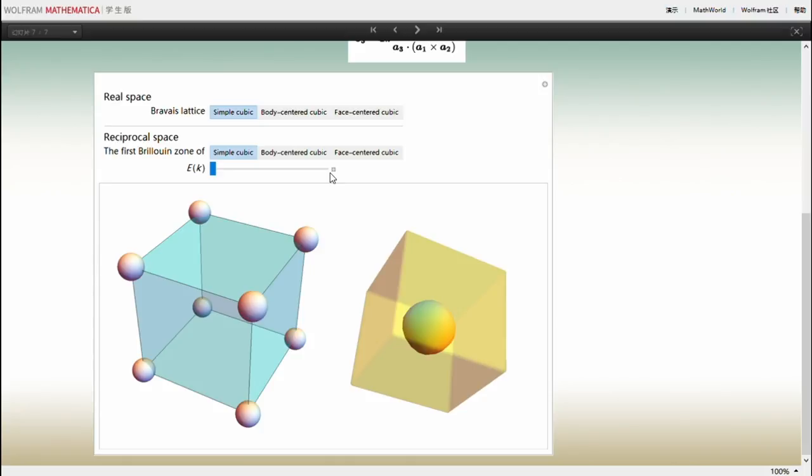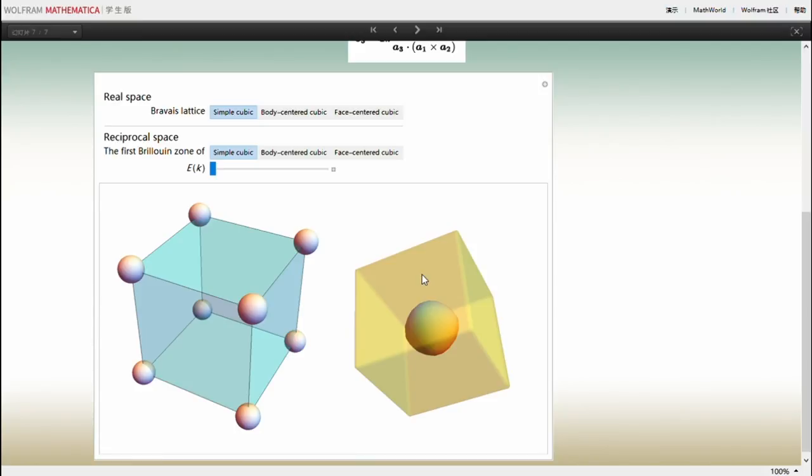These graphs show the Bravais lattice in real space, and its energy dispersion in the reciprocal space. For a simple cubic, the first Brillouin zone is a cube, and when the energy is small, the equal energy surface looks like a sphere, like the free electron case.